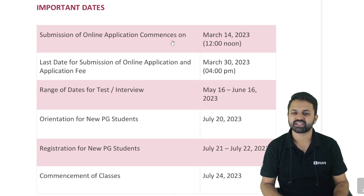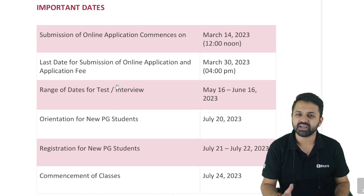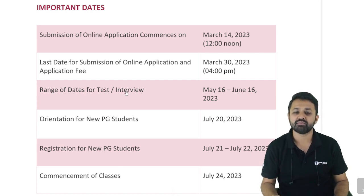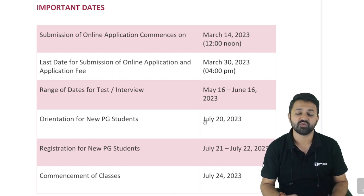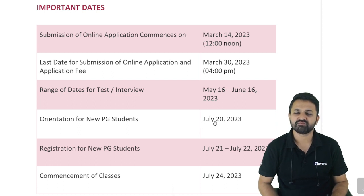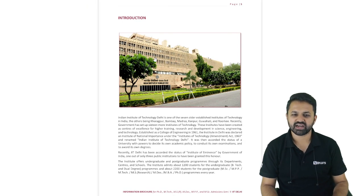The submission of online applications commenced from 14th March and the last date for submission is 30th March. Remember these dates. The range of dates for interview and test — some branches will have an interview while others will have direct admission — everything will be between 16th May to 16th June. Results will be announced as COAP. If you take admission and book the seat by paying the fees, you will get the orientation program on 20th July, registration on 21st and 22nd July, and classes will start from 24th July for M.Tech, PhD, M.Sc, or MS.